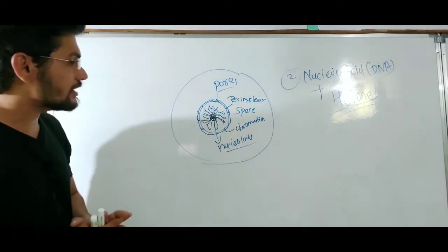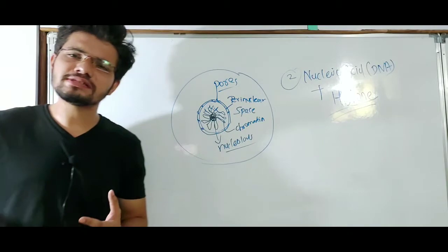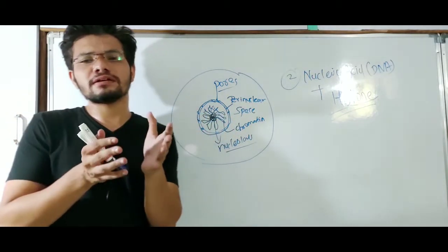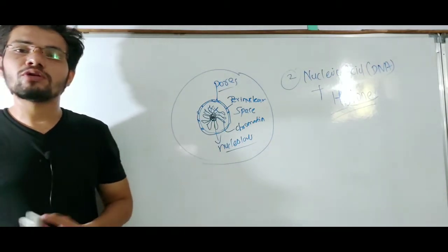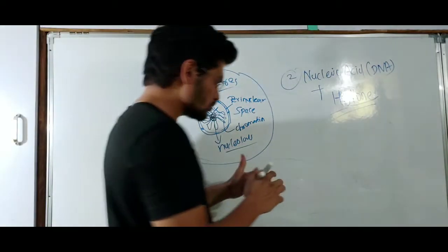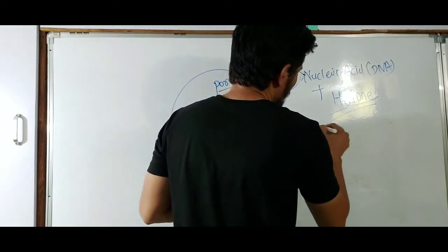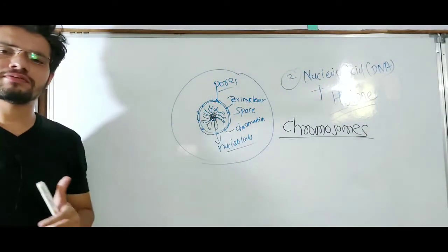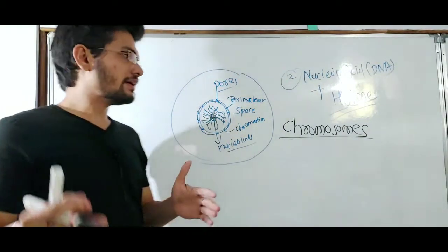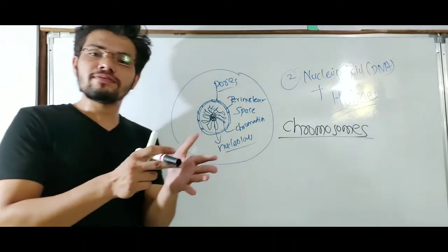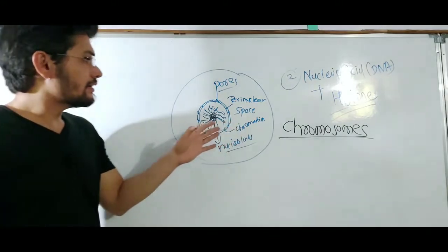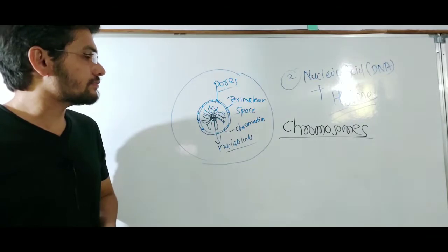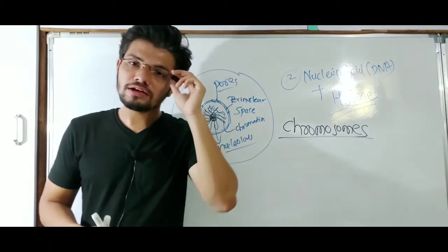Chromatin is present in the nucleus during interphase. In other different stages of the cell cycle, instead of chromatin, some other structures can be seen in the cell which are known as chromosomes. Chromosomes are structures that can be seen in different stages of the cell cycle after interphase.